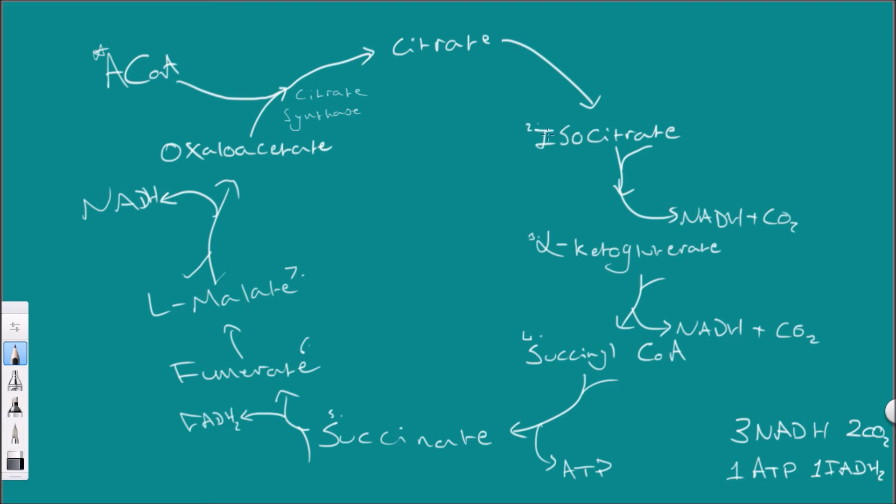When this citrate is converted to isocitrate, this is an isomerization reaction as you may assume from the iso, and this happens by an enzyme called aconitase. The reason I remember that one quite easily is because it's the only enzyme with one word.